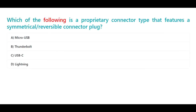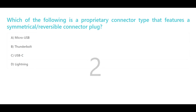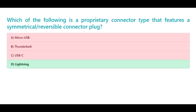Which of the following is a proprietary connector type that features a symmetrical/reversible connector plug? A. Micro USB. B. Thunderbolt. C. USB-C. D. Lightning. The correct answer is D. Lightning.